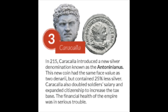Caracalla introduced a new silver denomination known as the Antoninianus. This new coin had the same face value as two denarii but contained 25% less silver. Caracalla also doubled soldiers' salaries and expanded citizenship to increase the tax base — the financial health of the empire was in serious trouble. They expanded citizenship, letting more people in and making it easier to qualify as a citizen to increase the tax base. However, many weren't paying taxes — there was a lot of welfare in the Roman Empire. Bread and circuses: people were given free bread and free entertainment, taken care of by the state.